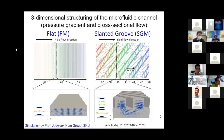We first looked at the pressure gradient and velocity vector field simulation. For the flat channel, the pressure is constant perpendicular to the flow direction, implying unidirectional laminar flow, which is confirmed in the velocity vector field simulation. For the SGM, the velocity vector field shows one large helical flow going across the channel.